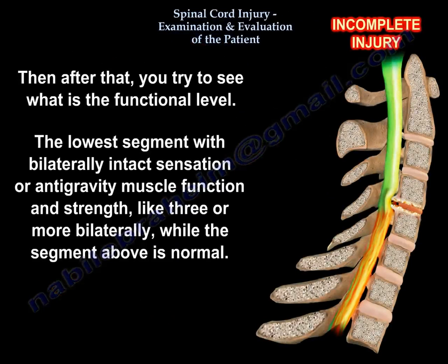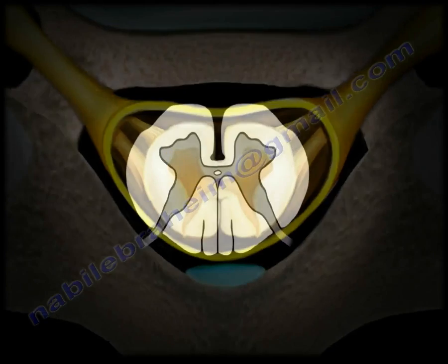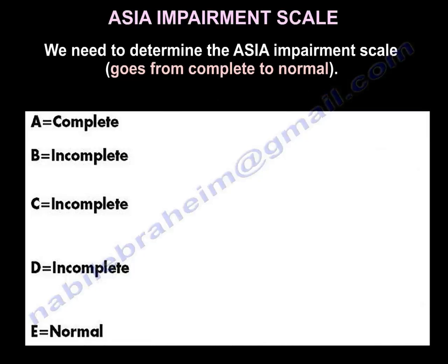After that, you try to determine the functional level — the lowest segment with bilaterally intact sensation or anti-gravity muscle function and strength of grade 3 or more bilaterally, while the segment above is normal. We also need to determine the ASIA impairment scale.